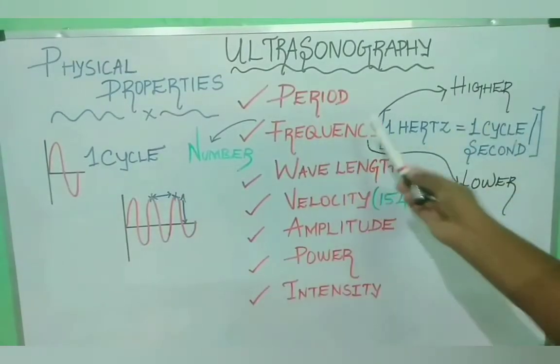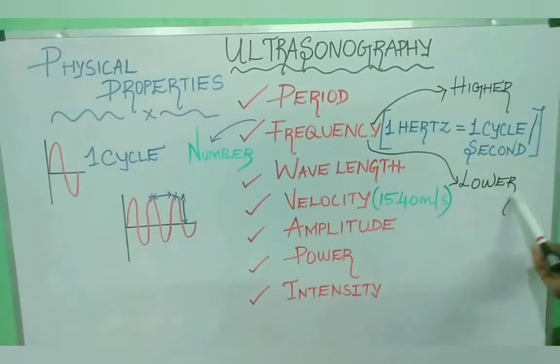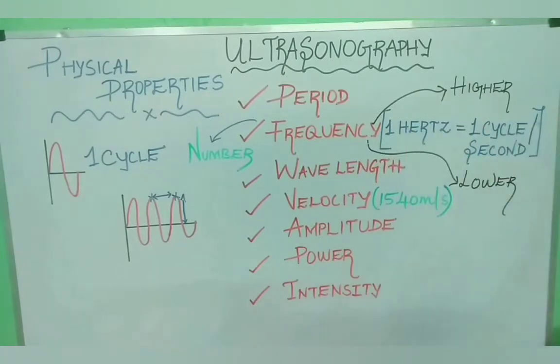Higher the frequency, shorter the wavelength. Higher frequency means more cycles per second. Lower the frequency, longer the wavelength. Lower frequency means less cycles per second.